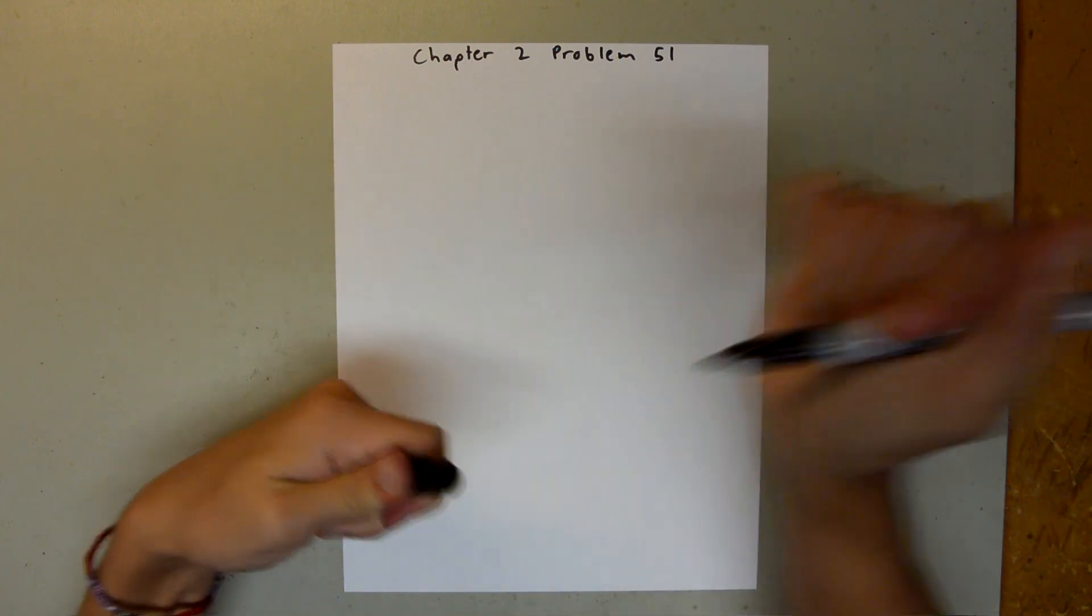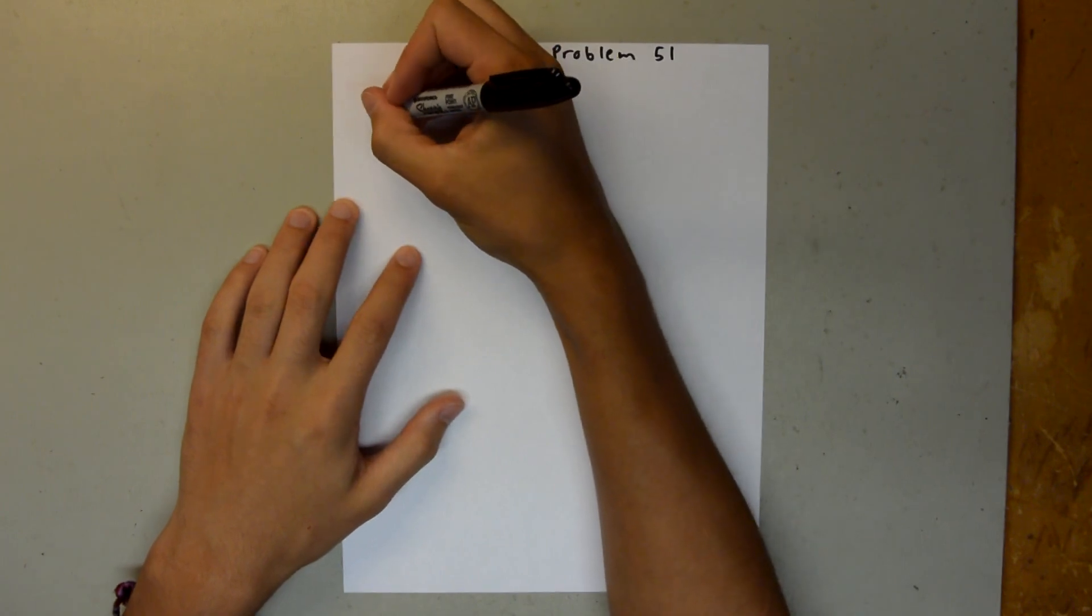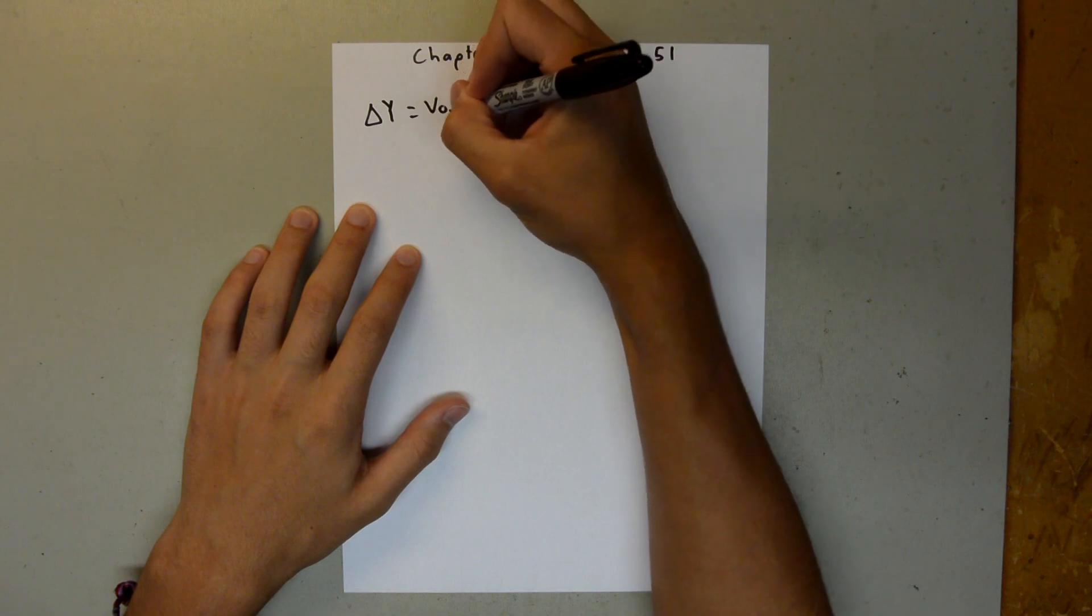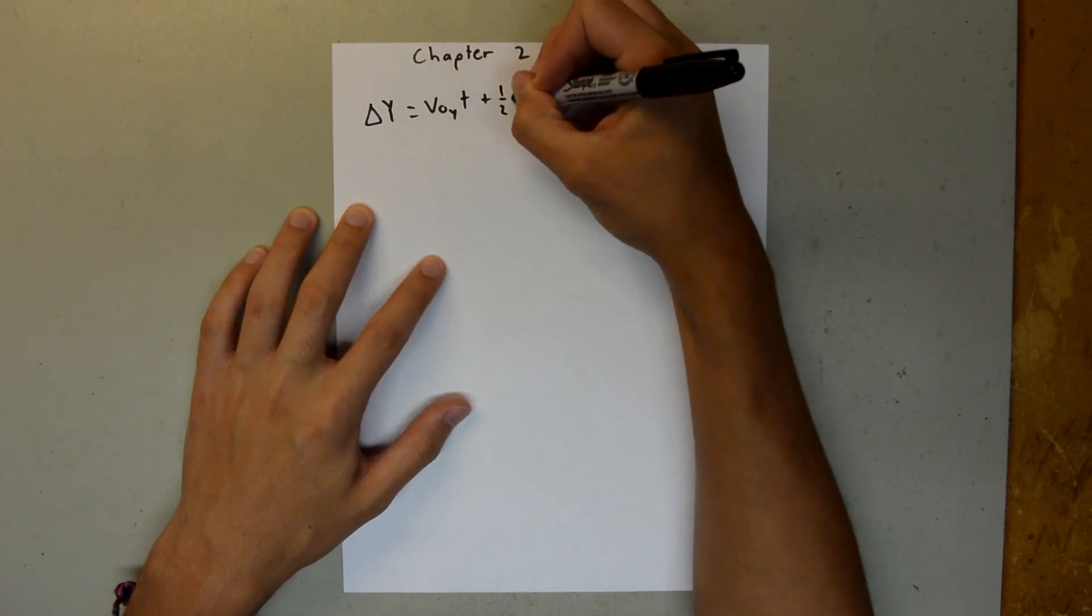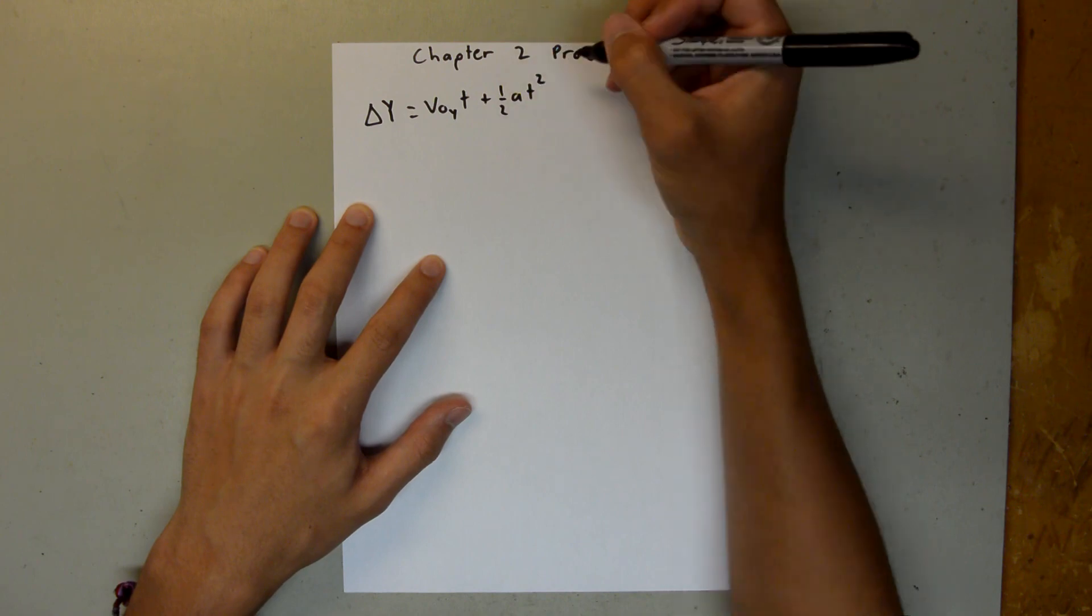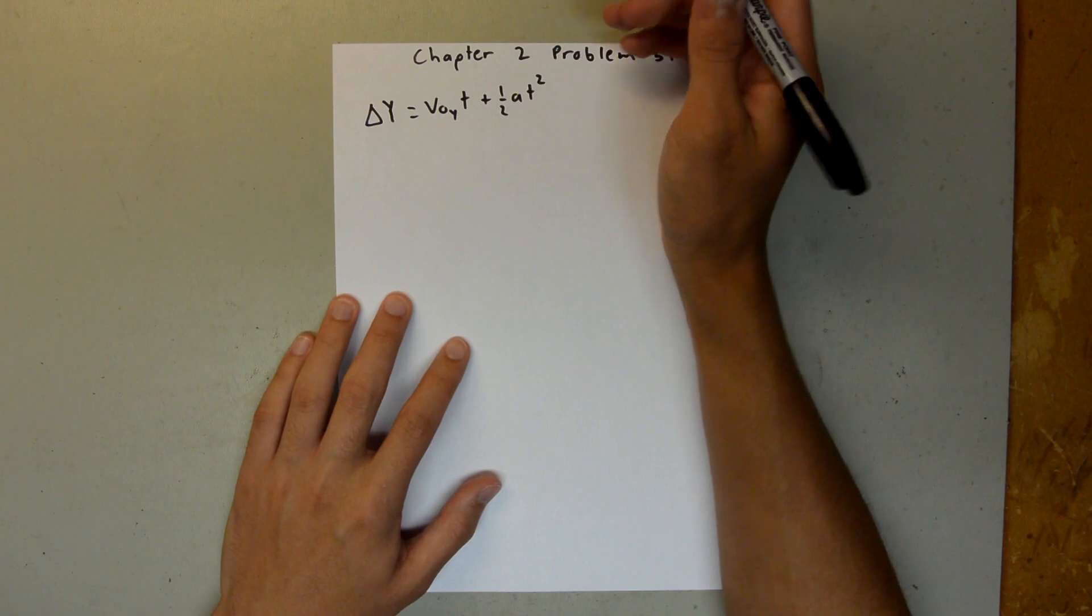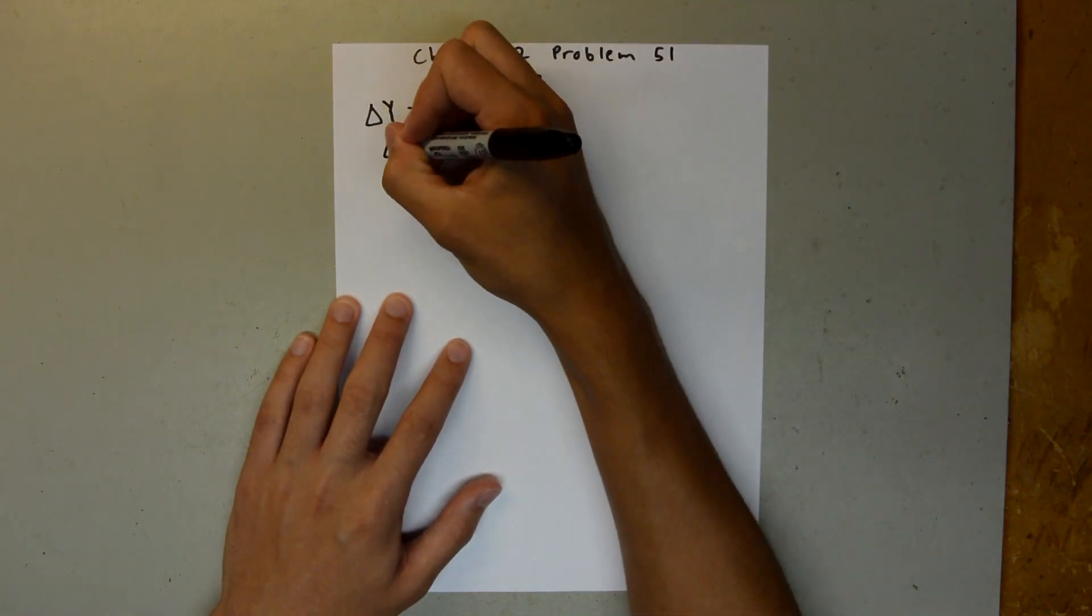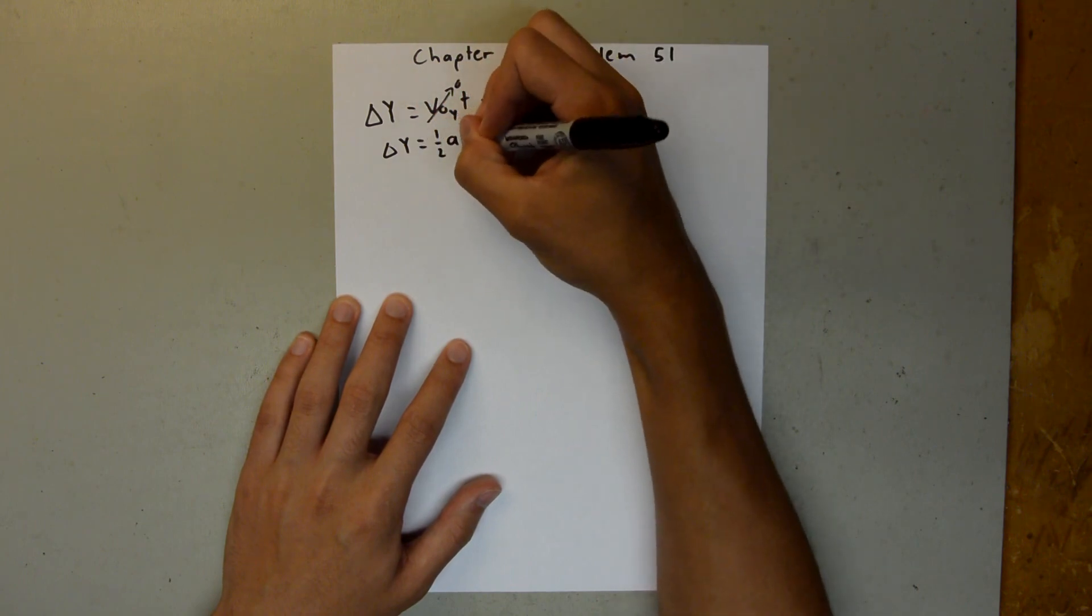So the first thing we need to do is solve for time, so we can use the kinematics equation delta y, or the change in y, is equal to the initial velocity in the y times time, plus 1 half times the acceleration times time squared.